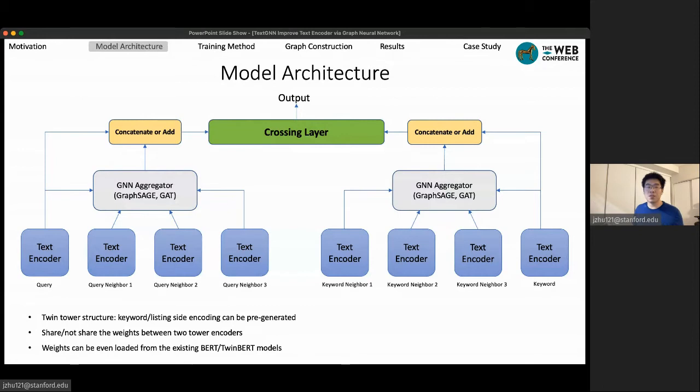Again, the structure is very flexible, so that the weights between the two towers can be shared or not shared, depending on your application and the needs or the constraint of the system. As we have the same text encoder parts as many popular models, we could even load the pre-trained BERT or TwinBERT weights and then fine-tune to speed up the training and come up with better performing models.